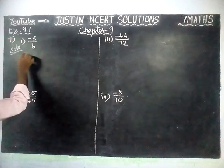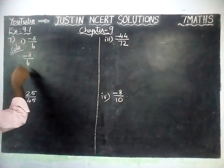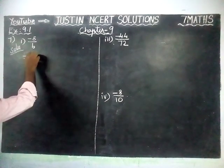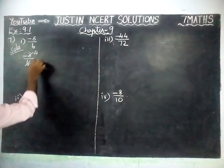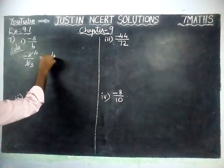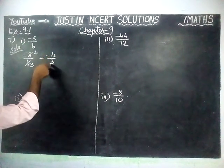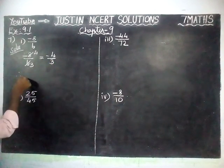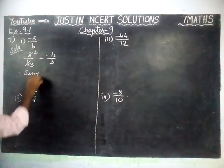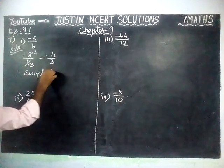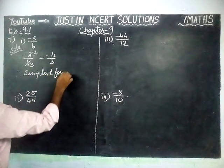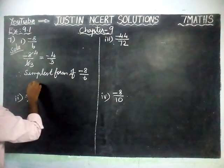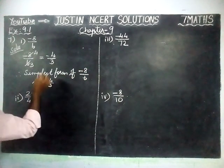First question solution: minus 8 by 6. We have to simplify by a common divisor. We can divide it by 2. 4 twos are 8, 3 twos are 6. Now minus 4 by 3 is there. Hereafter we cannot simplify because we don't have any other common divisor. Therefore, the simplest form of minus 8 by 6 is minus 4 by 3.